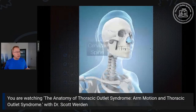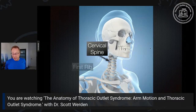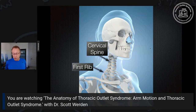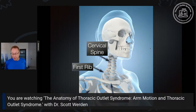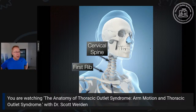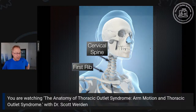Here are the basic bony structures we need to know: the cervical spine, or neck; the first rib, at the top of the rib cage, which has 12 ribs on each side; the clavicle, or collarbone; and the scapula, or shoulder blade. We'll talk in particular about the collarbone and the shoulder blade. I'll try to use plain English terms to make it easy for all of us.